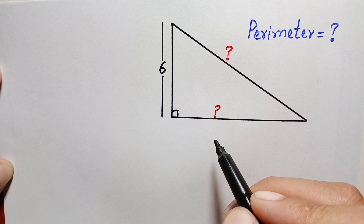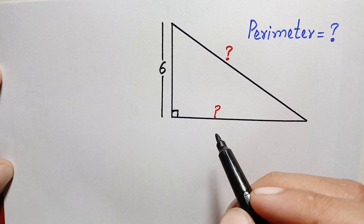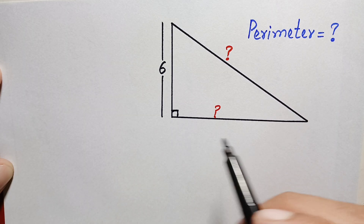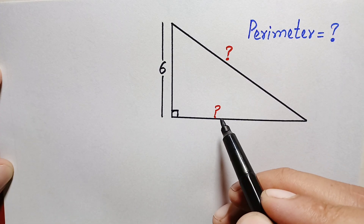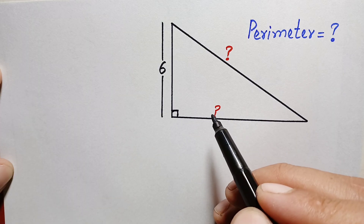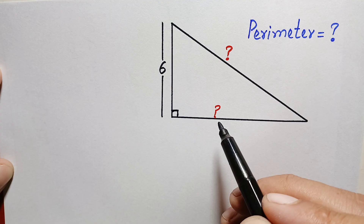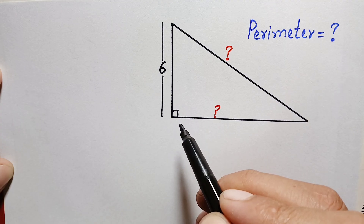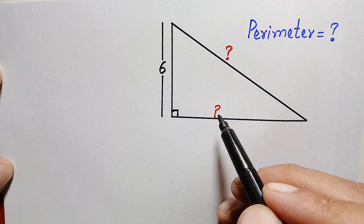Hello everyone, welcome. Today we have a new geometry math problem. We are given a right angle triangle whose height or perpendicular is 6 units. The other two sides are not given, and we will try to find out the perimeter of this triangle. The perimeter of any closed figure is the sum of all its sides, so we need to find those two missing sides.